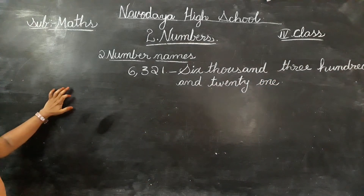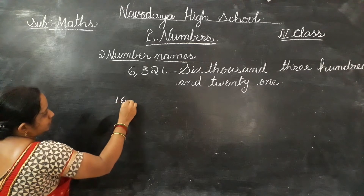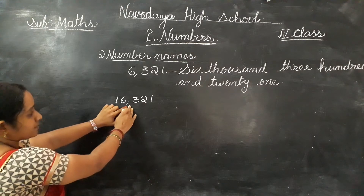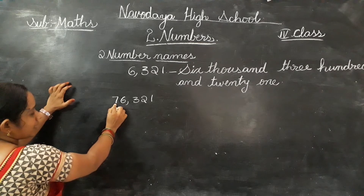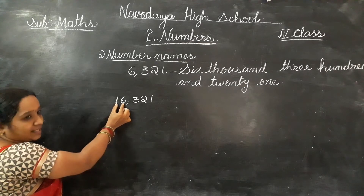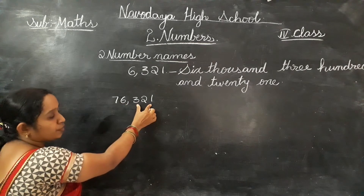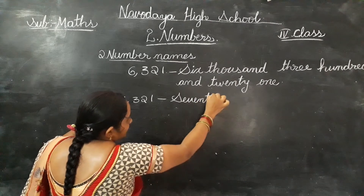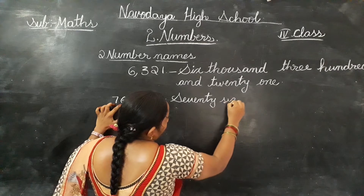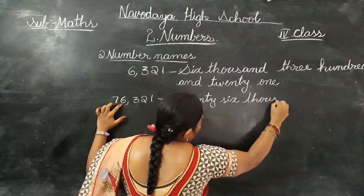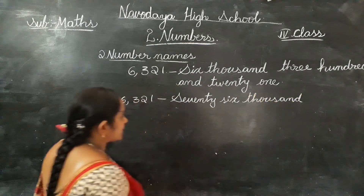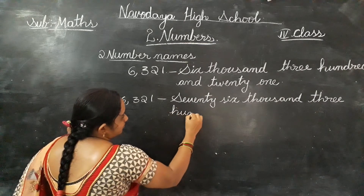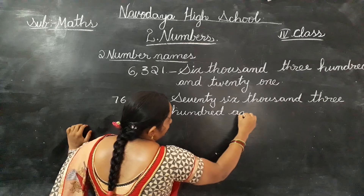Now if you take a five digit number: seventy-six thousand three hundred and twenty-one. Every time you keep a comma after the thousandths place and before the hundredths place, and you read the ten thousands and thousands place values together as seventy-six. So it is seventy-six thousand three hundred and twenty-one — seventy is spelt S-E-V-E-N-T-Y, six is S-I-X, then thousand, three hundred and twenty-one.